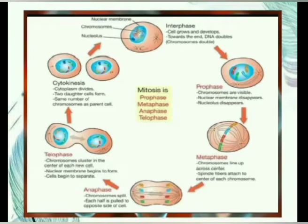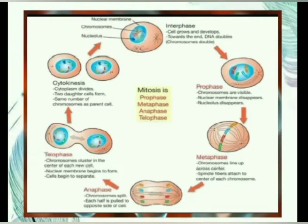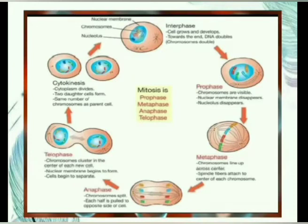The next is anaphase — chromosomes split and each half is pulled to the opposite side of the cell. In anaphase, the sister chromatids separate and begin moving to opposite ends of the cell. Spindle fibers not connected to chromatids lengthen and elongate. At the end of anaphase, each pole contains a complete set of chromosomes — they are now on both opposite sides of the cell.